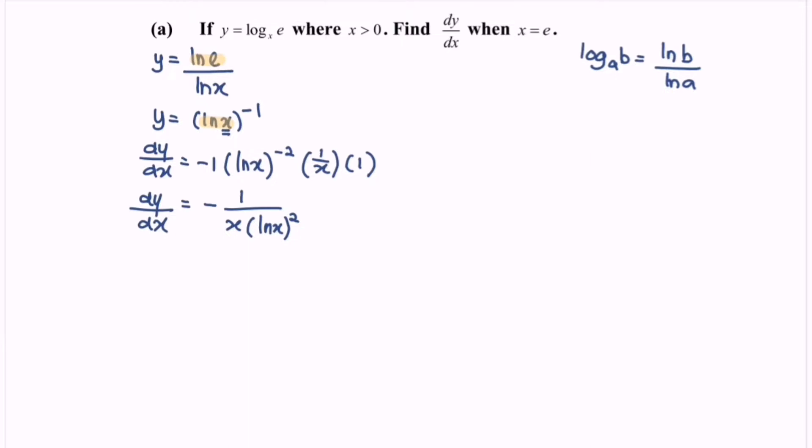Next, the question asks us to find dy/dx when x equals e. Let's substitute. So dy/dx equals negative 1 over e multiplied by (ln e) squared.